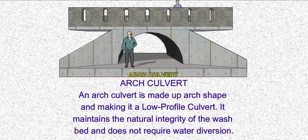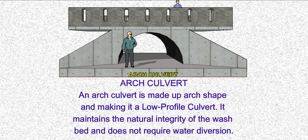Arch culvert. An arch culvert is made up of an arch shape, making it a low-profile culvert. It maintains the natural integrity of the washbed and does not need water diversion.